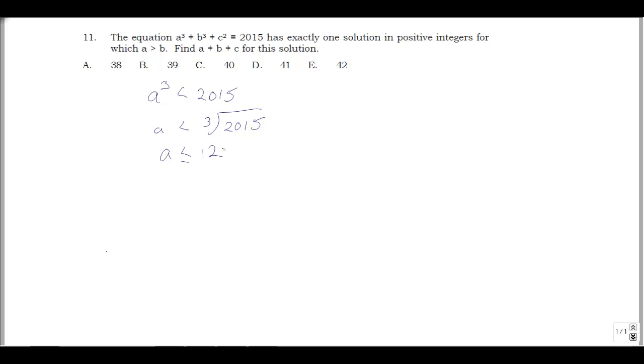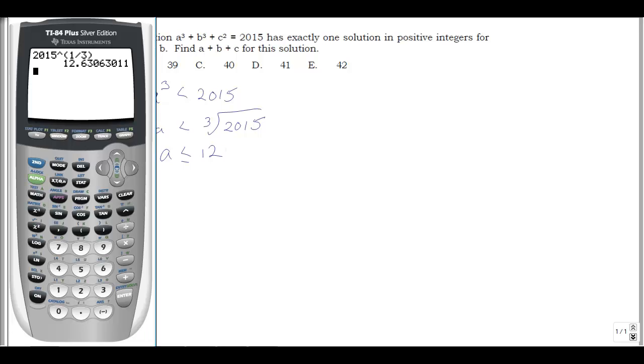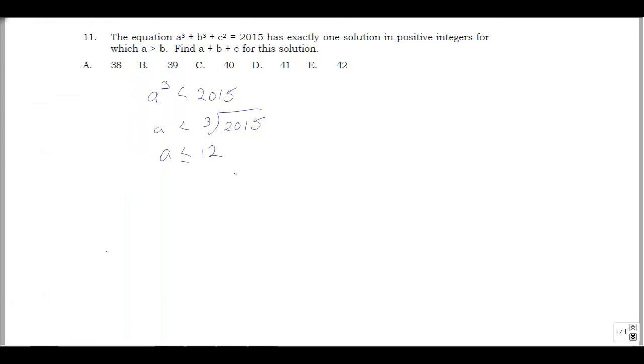So we've got 12 possible values for a, and now I'm just going to use my calculator to go through a bunch of possibilities. So what I'm going to do is go to y equals, let's just fill in values for a. We have a greater than b, so we'll start at the large values of a.